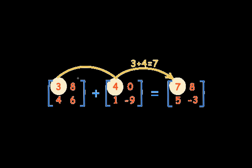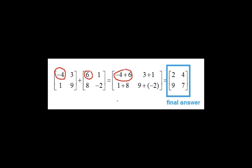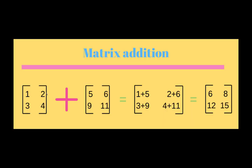So 3+4, 8+0, 4+1, and 6+(-9), so the final result will be 7, 8, 5, -3. In another example, -4+6 = 2, 3+1 = 4, 1+8 = 9, and 9+(-2) = 7. One more example: 1+5=6, 2+6=8, 3+9=12, and 11+4=15. Very simple.